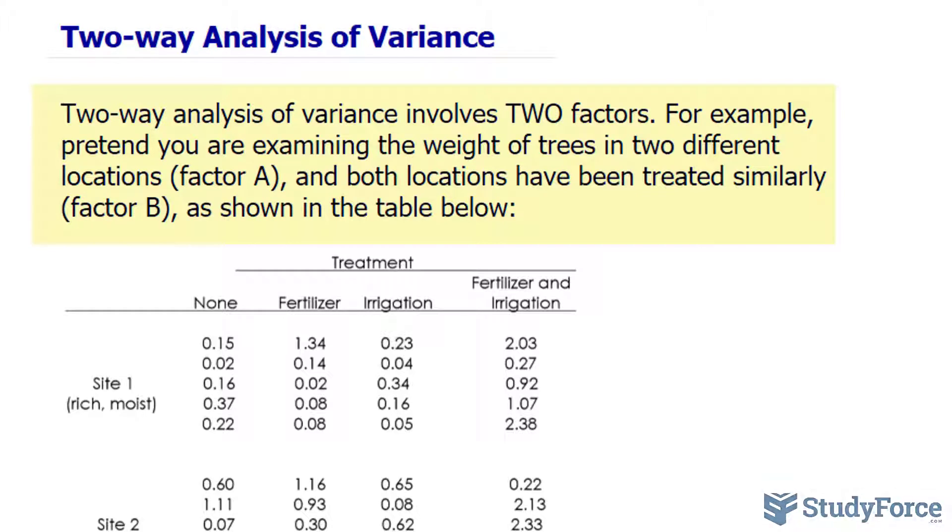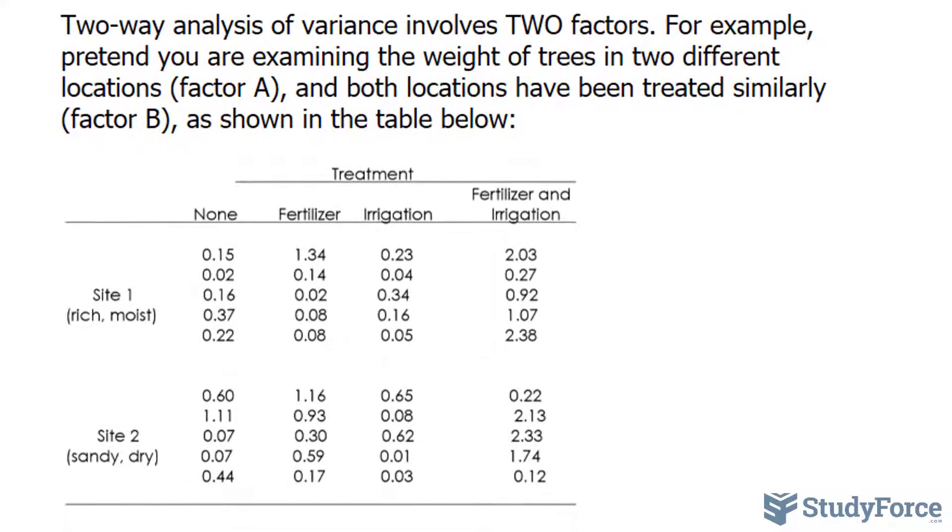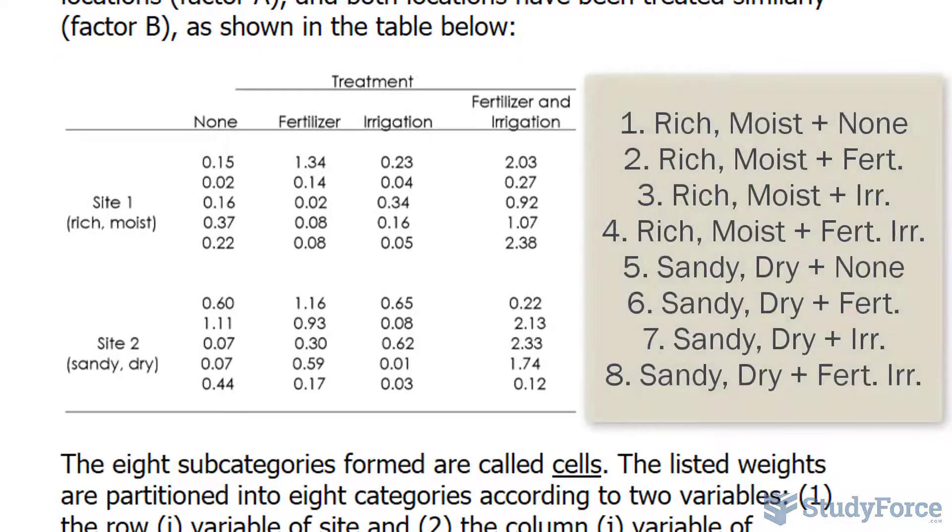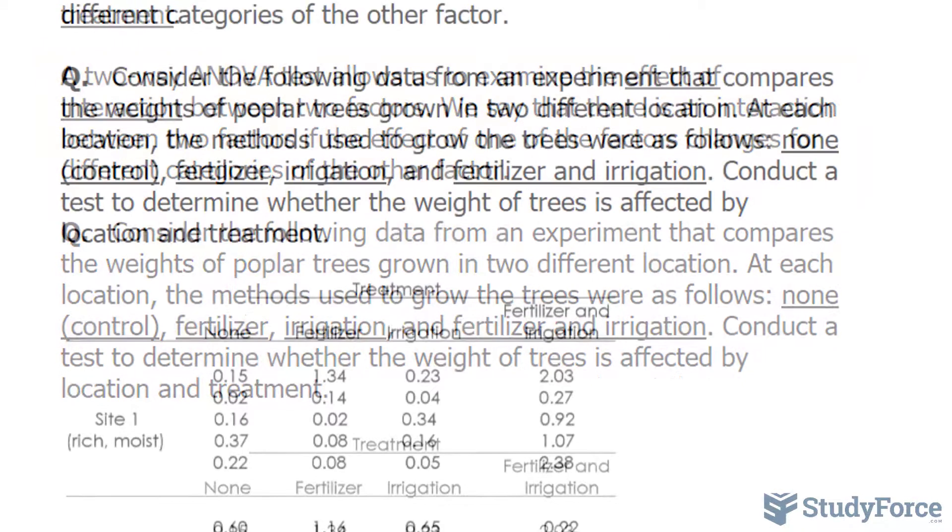For example, pretend you are examining the weight of trees in two different locations. Both locations have been treated similarly, as shown in this table. The listed weights are partitioned into eight categories according to two variables. For future reference, each of these subcategories are called cells. The two-way ANOVA test allows us to examine the effect of interaction between two factors. We say that there is an interaction between two factors if the effect of one of the factors changes for different categories of the other factor.